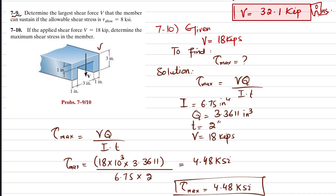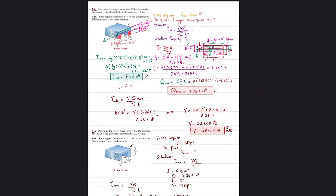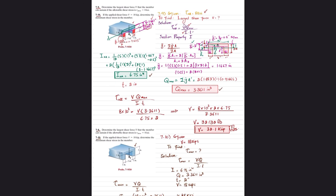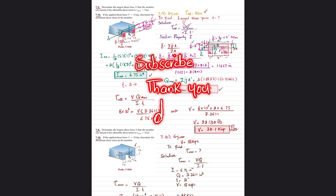So the maximum shearing stress is 4.48 KSI. That is the answer to question 7-10. I hope you enjoyed both problems and learned from them. If you're new to my channel, please subscribe and hit the bell icon for notifications. If you have any questions, ask in the comments. Thank you for watching.